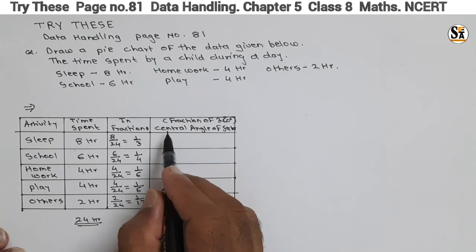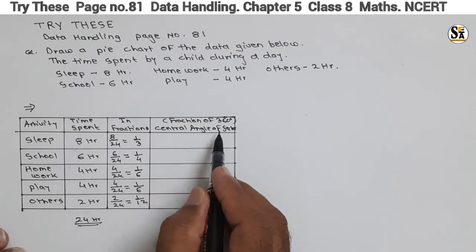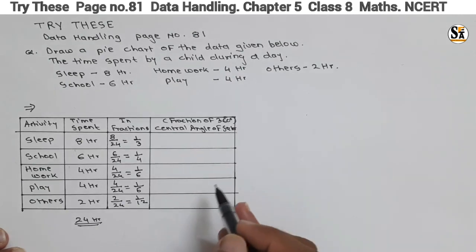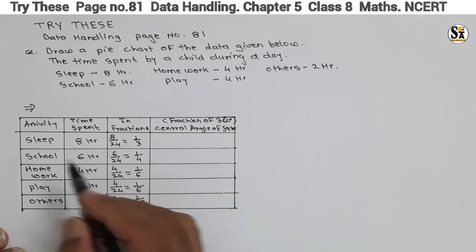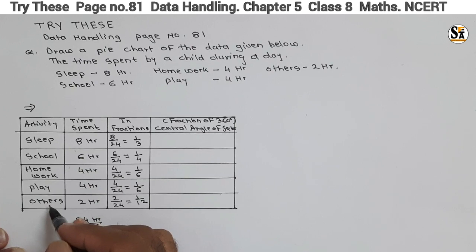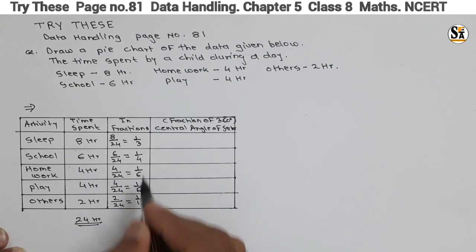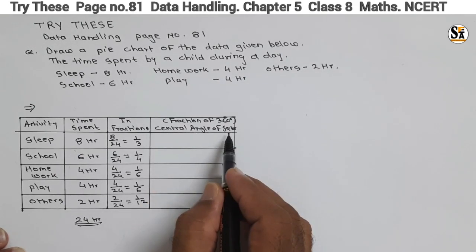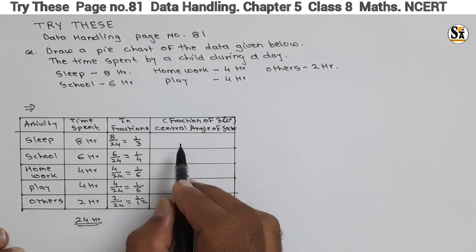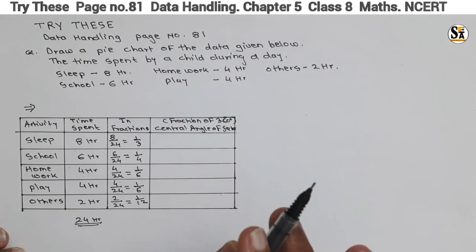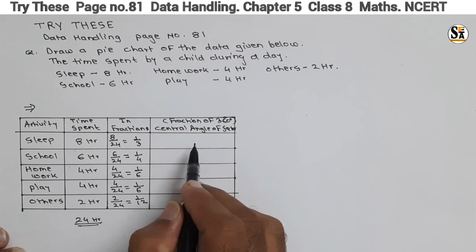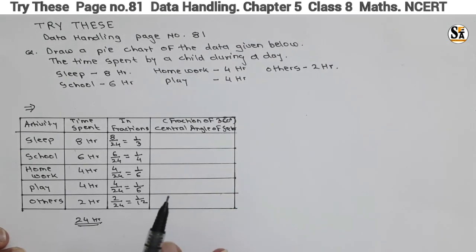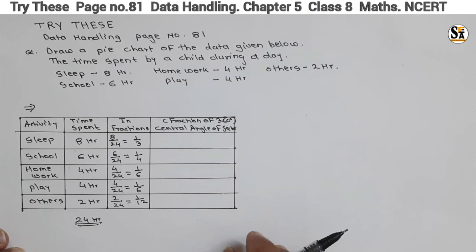Now we have to calculate the central angle of each sector. In a pie chart, data is represented in circular form with sectors. The total angle of a circle at the center is 360 degrees. The central angle of each sector will be its fraction multiplied by 360 degrees.